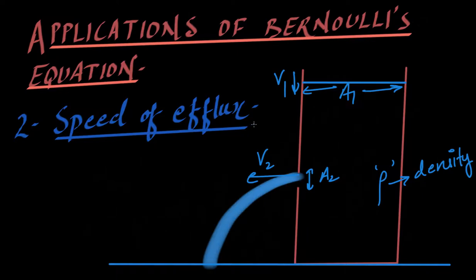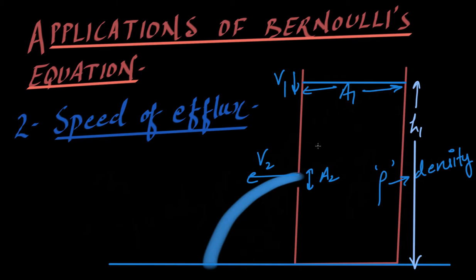In this video I want to talk about the second application of Bernoulli's equation, which is called speed of efflux. Imagine there is a container with some fluid filled up to a height of h1 from the ground. There is a hole at a height h2 above the ground, which has an area of cross-section a2.